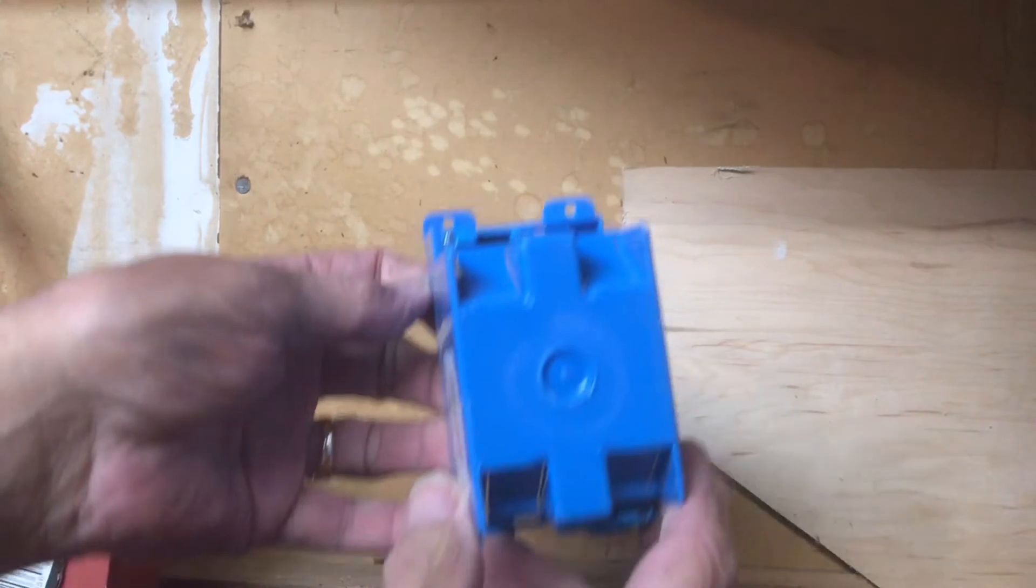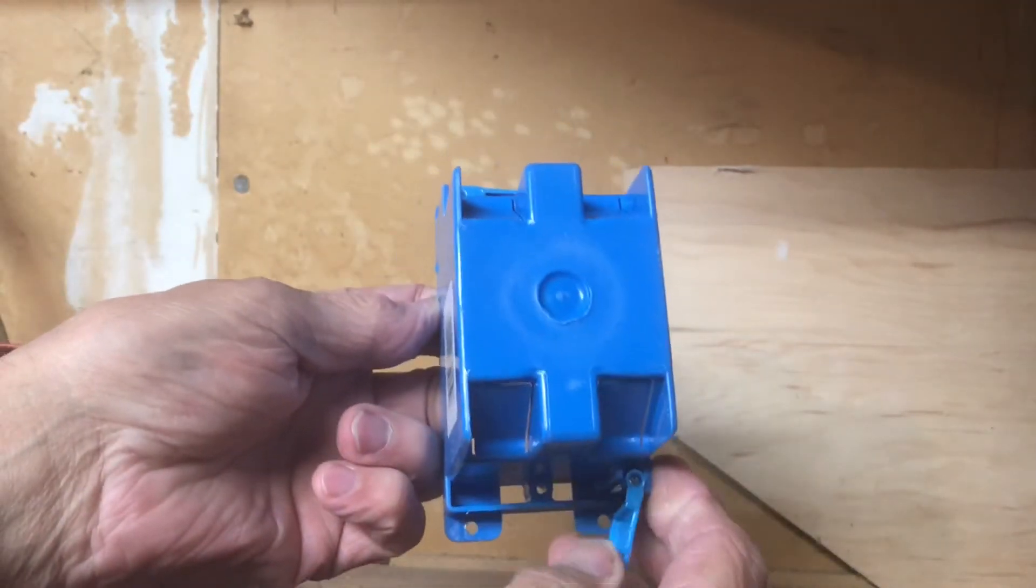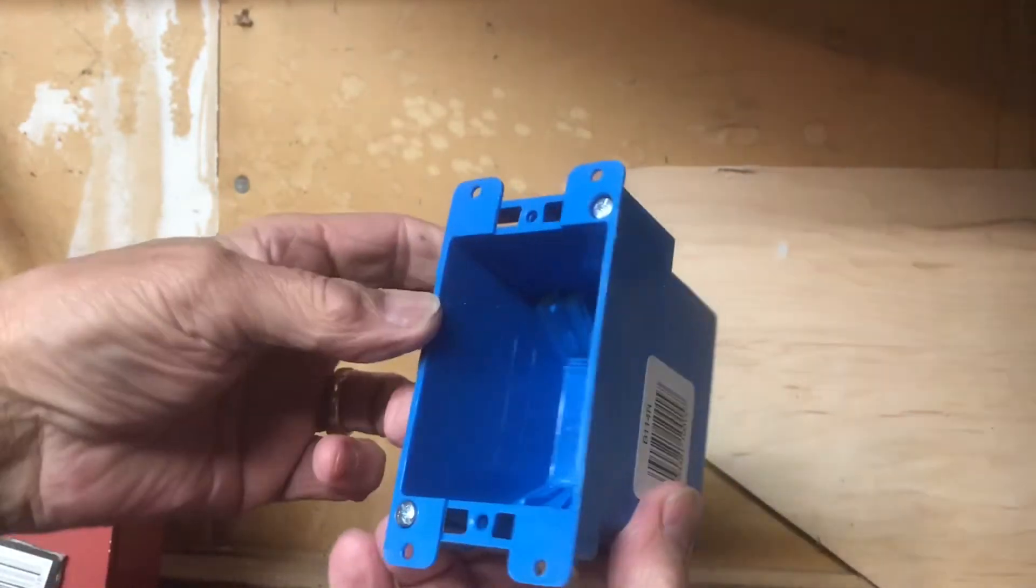So this is a remodel cut-in box and it's actually got flaps that when you tighten the screws on the other side, these will flip up behind the sheetrock and then you'll tighten it up.